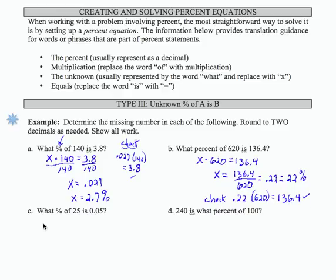Part C, what percent, so X of 25. So X times 25 equals 0.05. And again, I'm going to skip the step where I divide both sides by 25. I'm going to show that computation on the right-hand side. So 0.05 divided by 25 equals 0.002, which as a percent, is 0.2%.